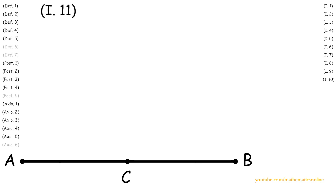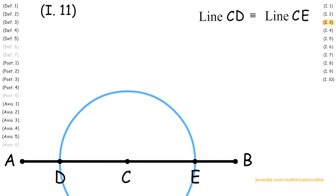First on line AC, we create point D, and with line CD, we apply Proposition 3, so that line CD is congruent to line CE.